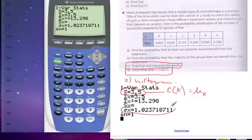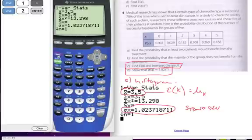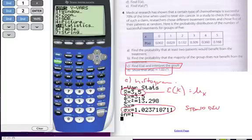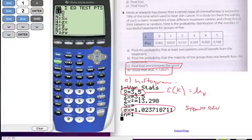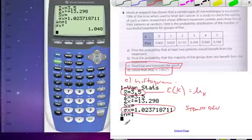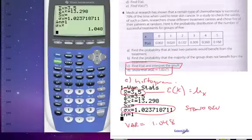This value here is the standard deviation. If I want to find the variance, what do I do with that value? I take that value and I square it. So if I go to my calculator, I could go to variables, and I can go to statistics, find my sigma, which is standard deviation, which is number 4, and I can square it. And this here is my variance. So my variance is equal to 1.048.